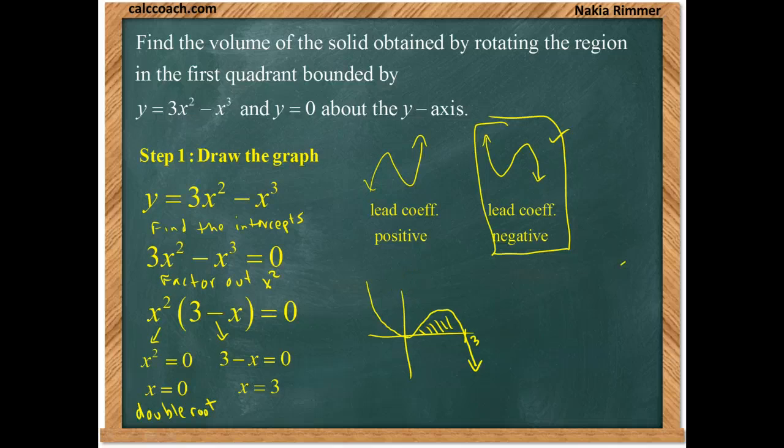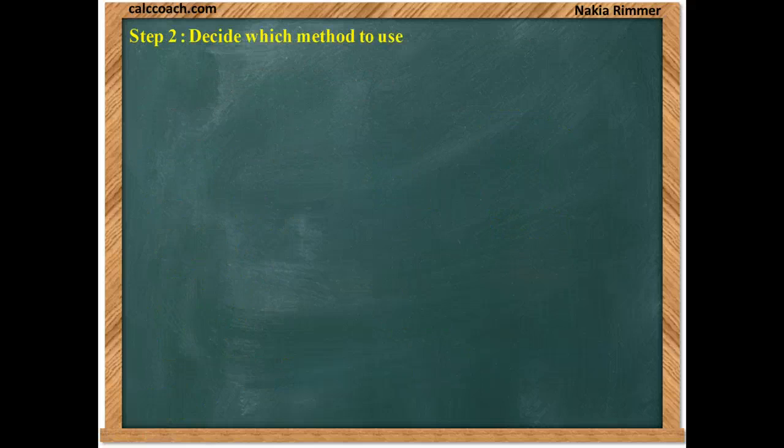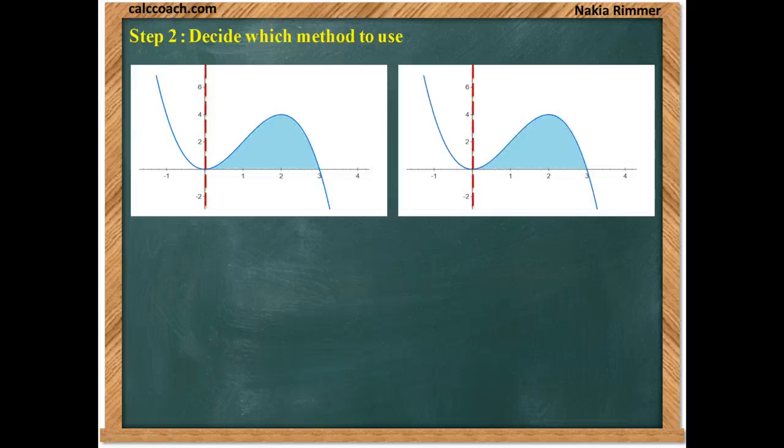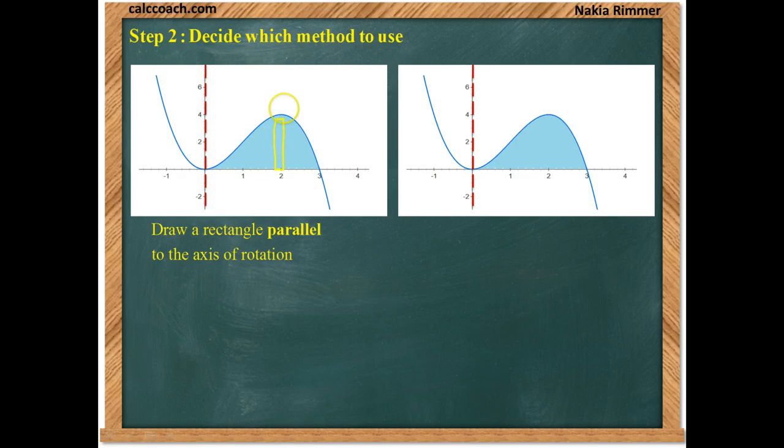Now let's move to step two. In step two, what we need to do is decide which method to use. I like to have two drawings. One where I draw a rectangle that is parallel to the axis of rotation. Another where I draw a rectangle that is perpendicular to the axis of rotation.